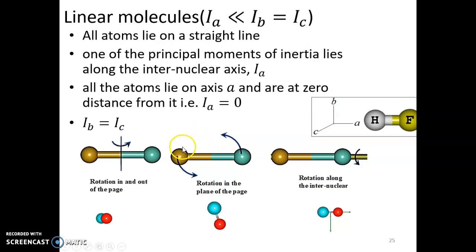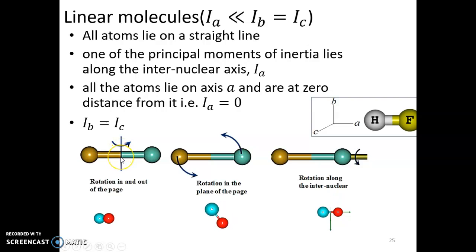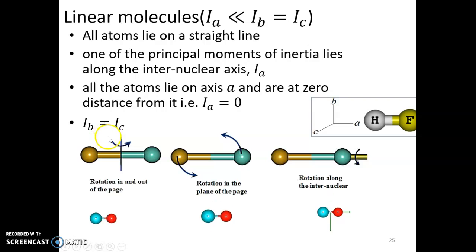For rotation in the plane of the page, the axis passes through the center of mass and there is a rotating distance. For rotation in and out of the page, the rotating distances are equal for both cases, and therefore Ib equals Ic.